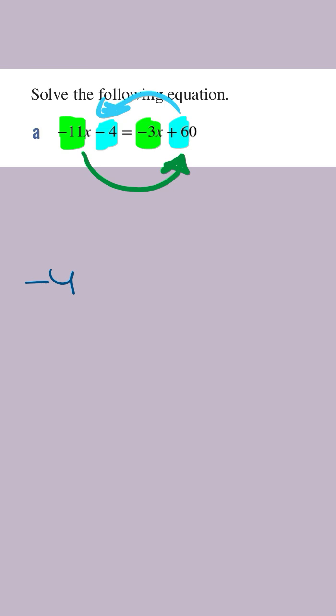Whenever you move a number to the other side of the equal sign or a term, you do the opposite operation. And so this is going to become minus 60. This is going to equal the right hand side.